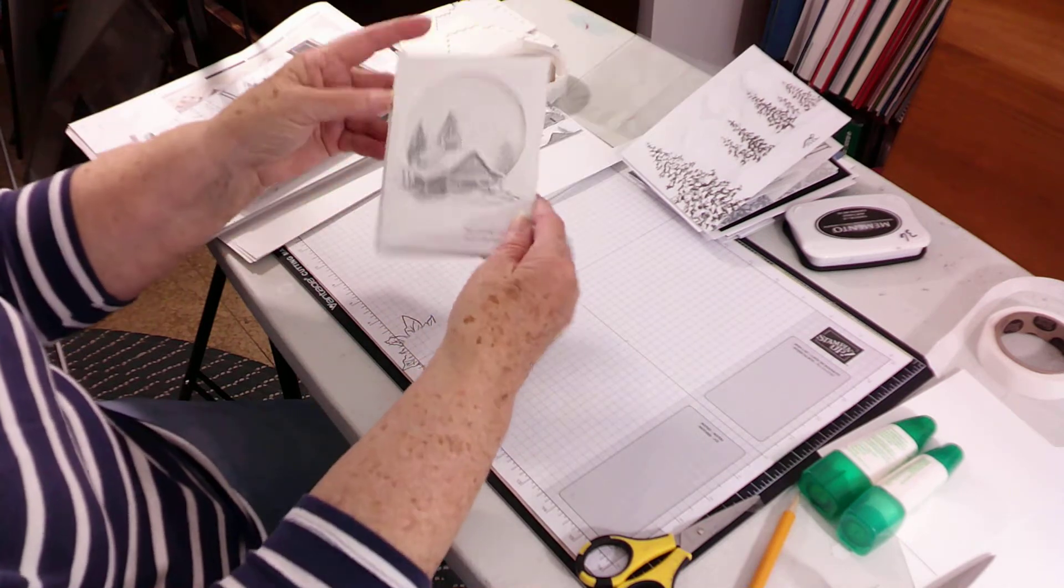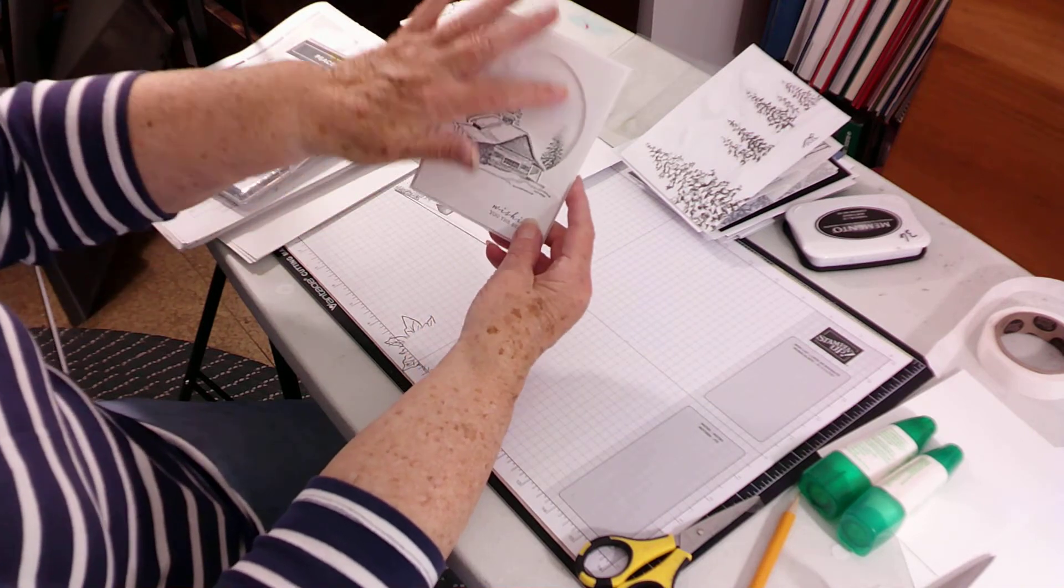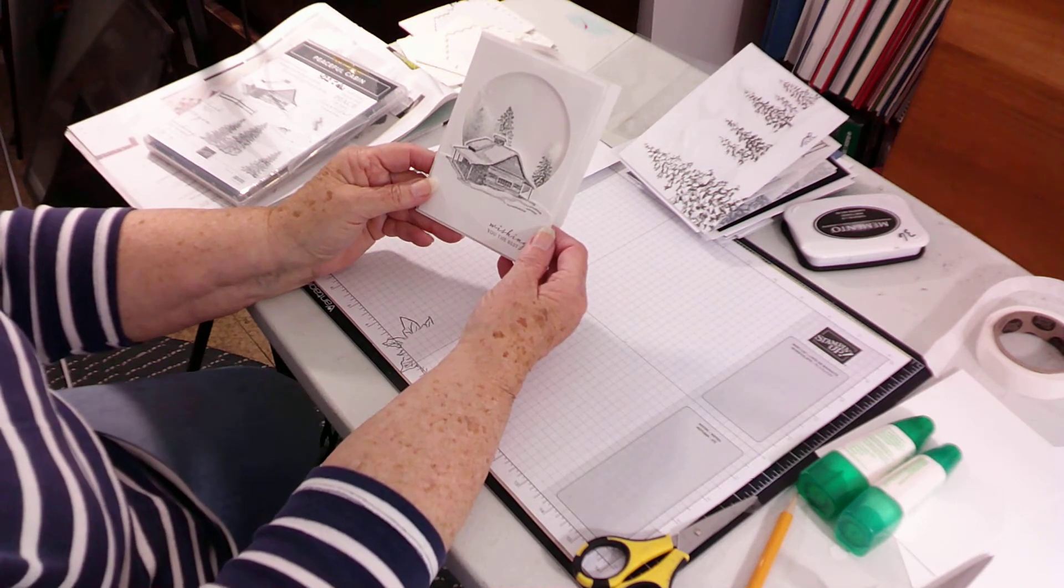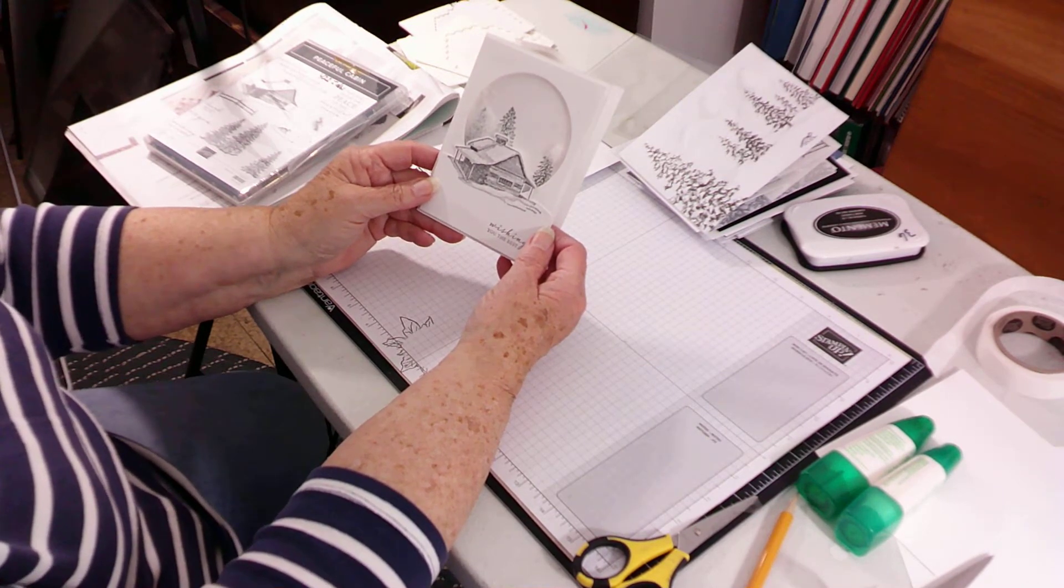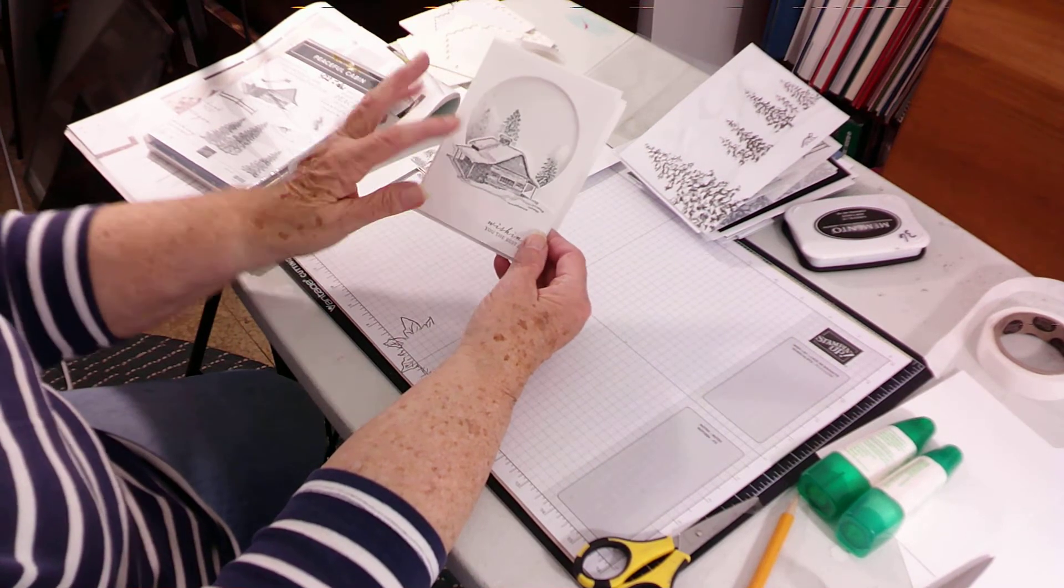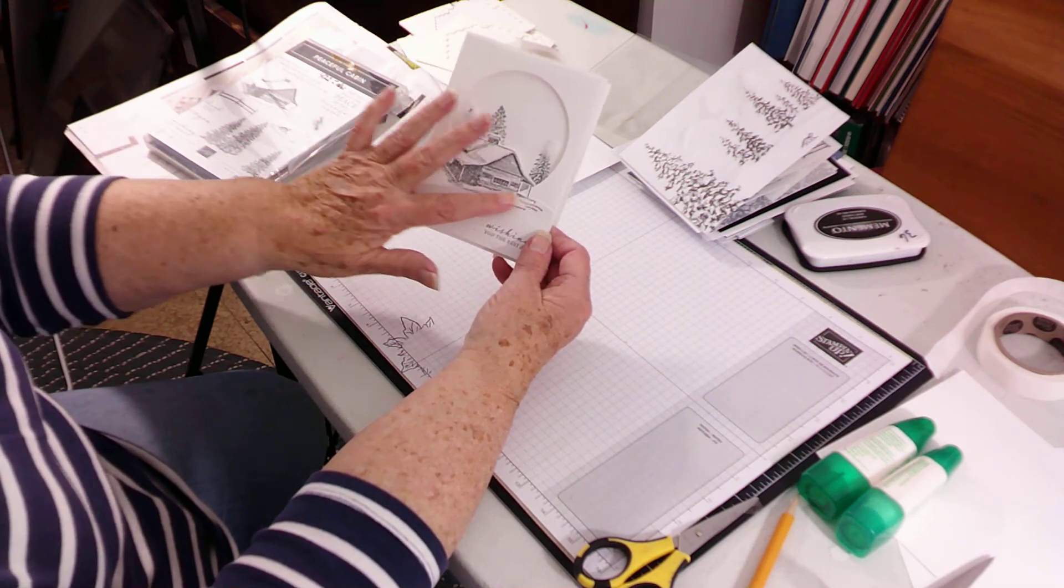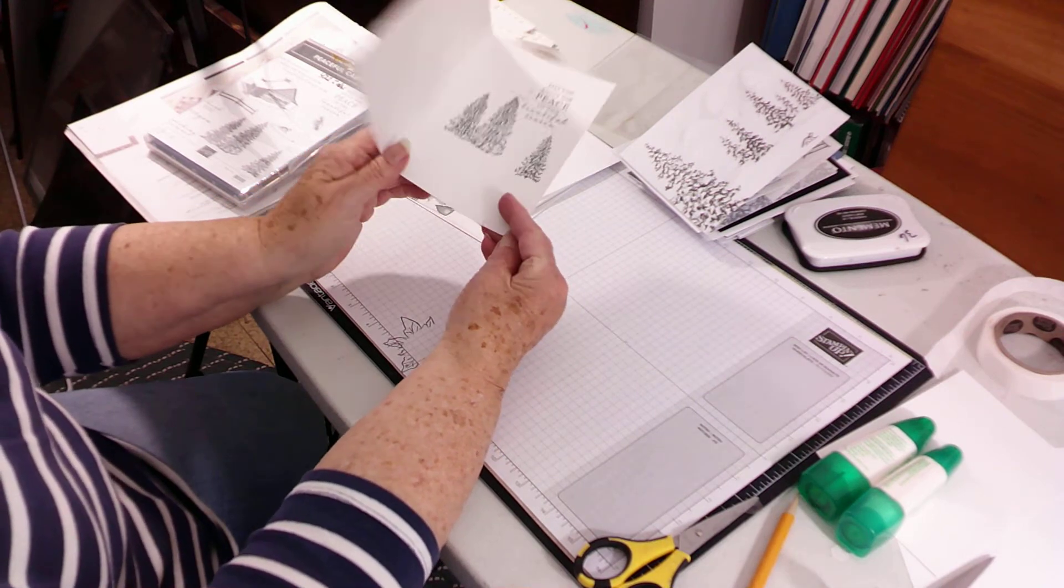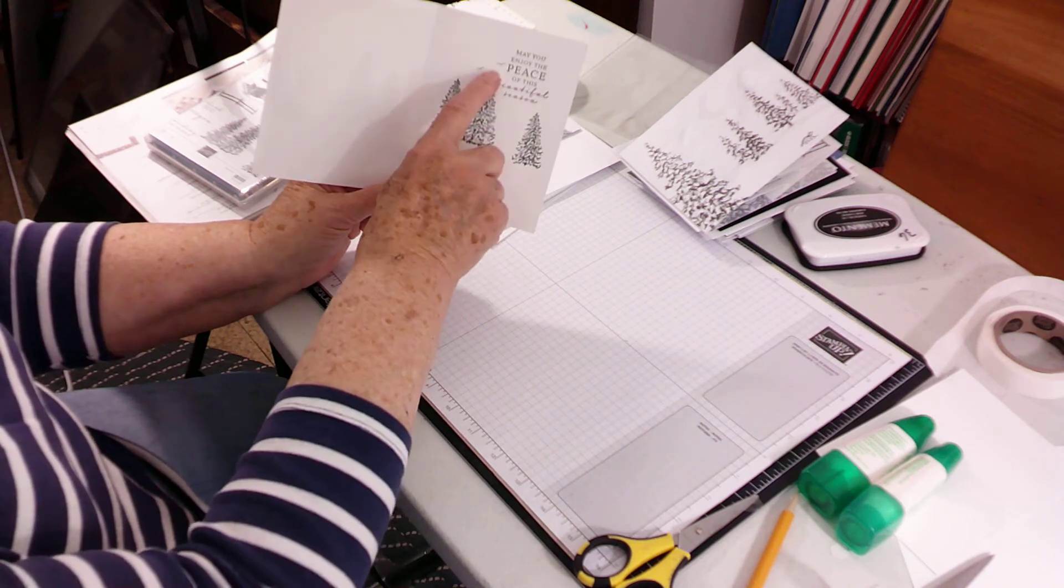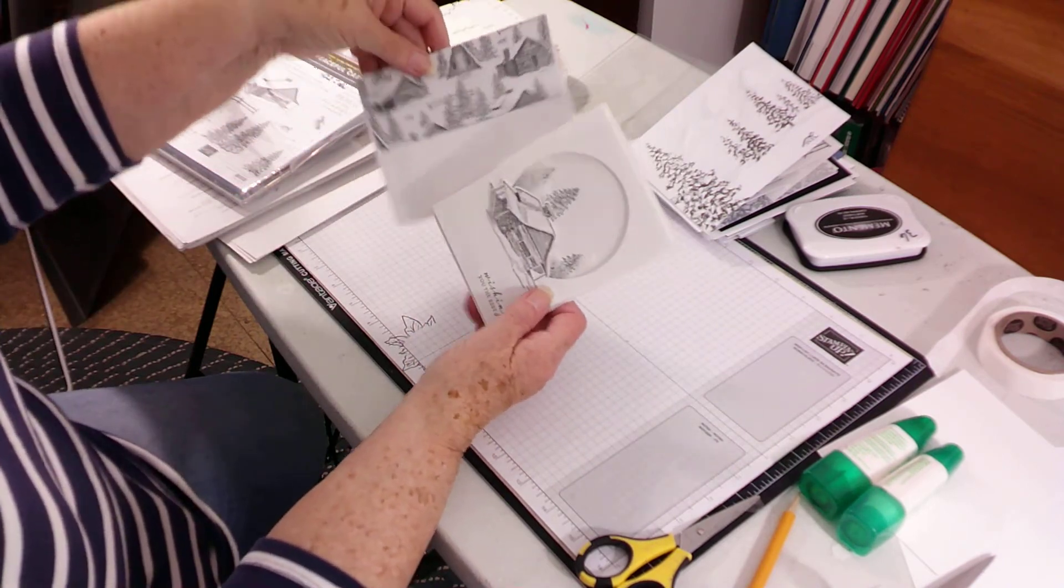Then I made a shaker card with snow. And if you want to know the directions for any of these you can email me at pamelliot77777 at gmail.com and ask. I also put a Wink of Stella or glitter on the roof and the snowbank. And then on the inside I did trees in this and you know that I got an ink spot so I added some birds. And I used the cabin on this one as well.